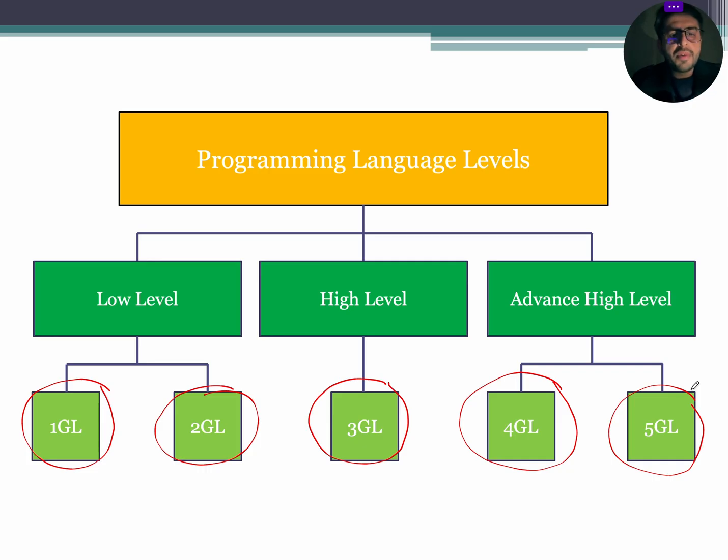A single computer program can be developed using multiple generations of programming language like an application software utilizing third generation, fourth generation and fifth generation all together to achieve the desired goals.